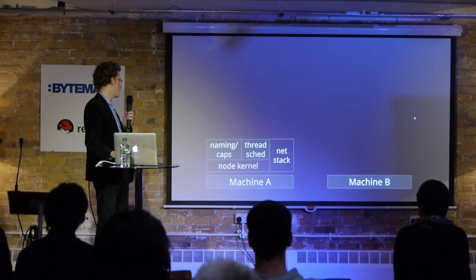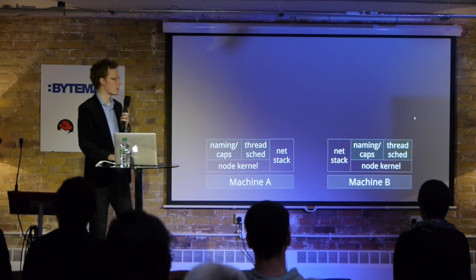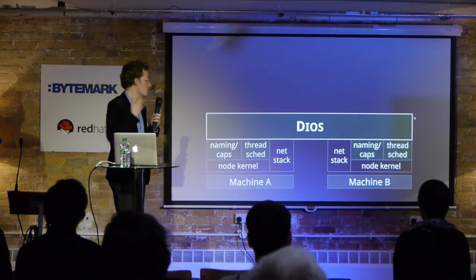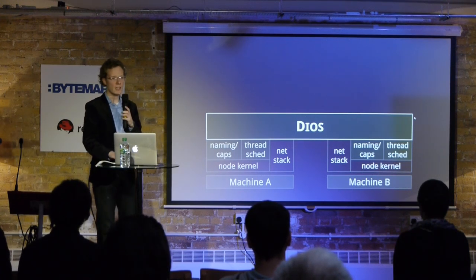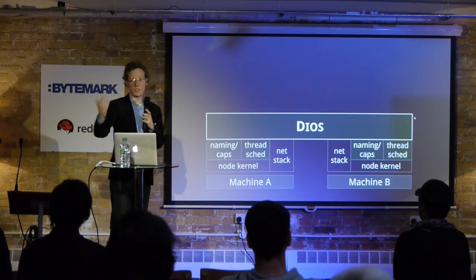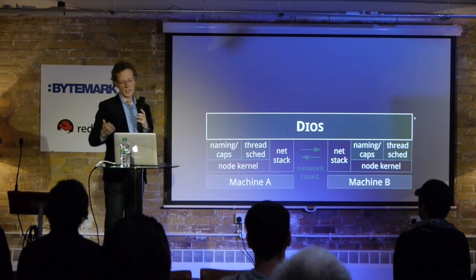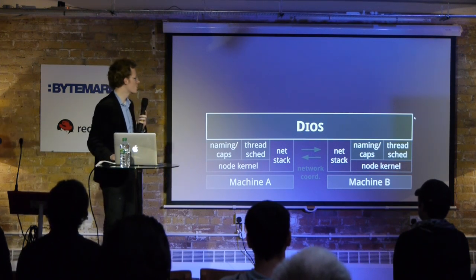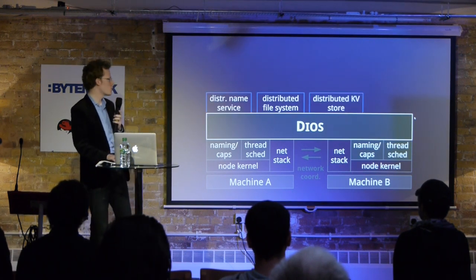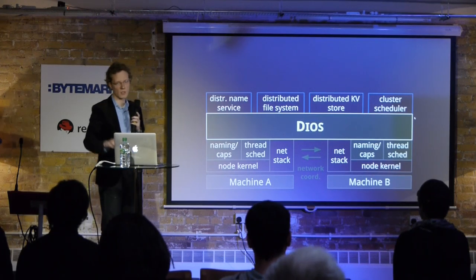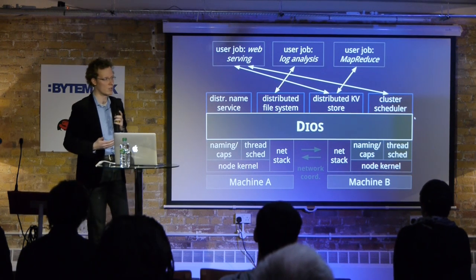So the architecture of DIOS looks a bit like this. You have a machine and another machine. They have a standard network stack and a standard legacy kernel. The green bits are DIOS's bits — you get some DIOS naming, some capabilities, some thread scheduling. And DIOS then spans the machines and gives you a single machine abstraction almost over the entire data center — kind of like a single system image, but a bit different. On top of DIOS, you can then build your distributed infrastructure: name services, file systems, key-value stores, cluster schedulers. And the user jobs run and interact with these using their own APIs.